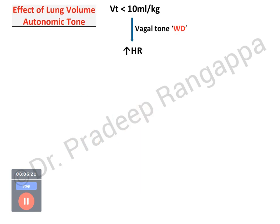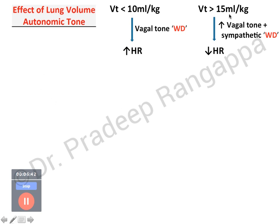Regarding the effect of lung volume on autonomic tone: if you are ventilating a patient with tidal volume less than 10 ml/kg, there is withdrawal of vagal tone and an increase in heart rate. But if you ventilate at more than 15 ml/kg — which we would not do today — there is an increase in vagal tone plus sympathetic withdrawal, producing a bradycardic response. Lower tidal volumes cause tachycardia via vagal withdrawal; supranormal tidal volumes cause bradycardia by increasing vagal tone.